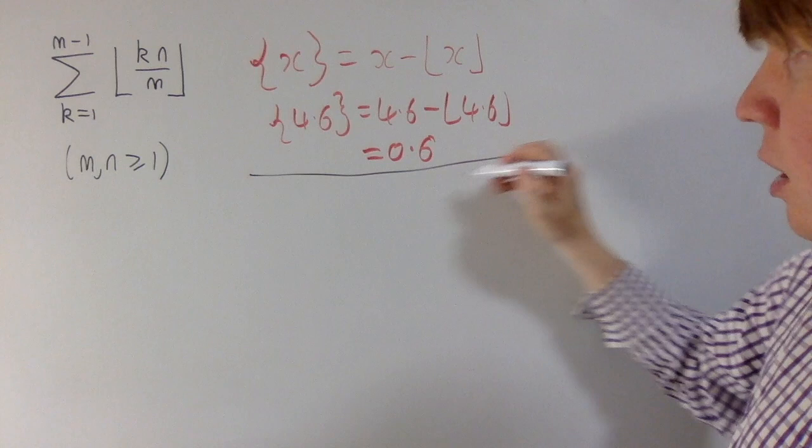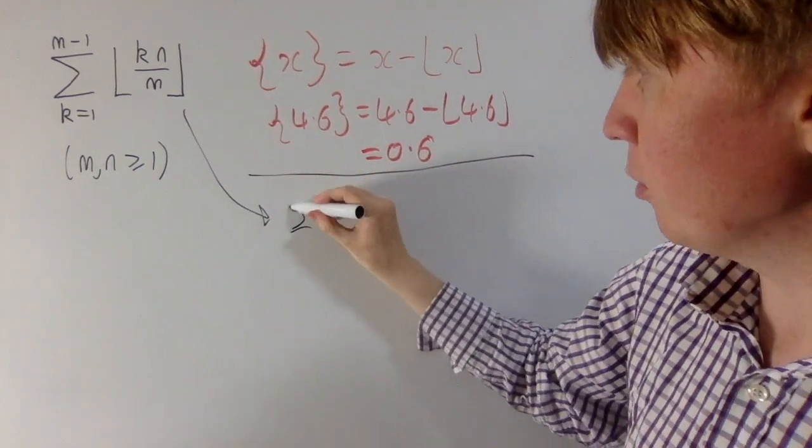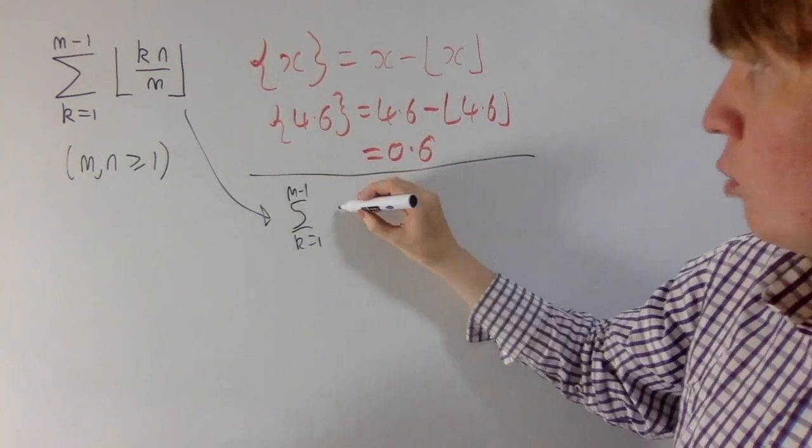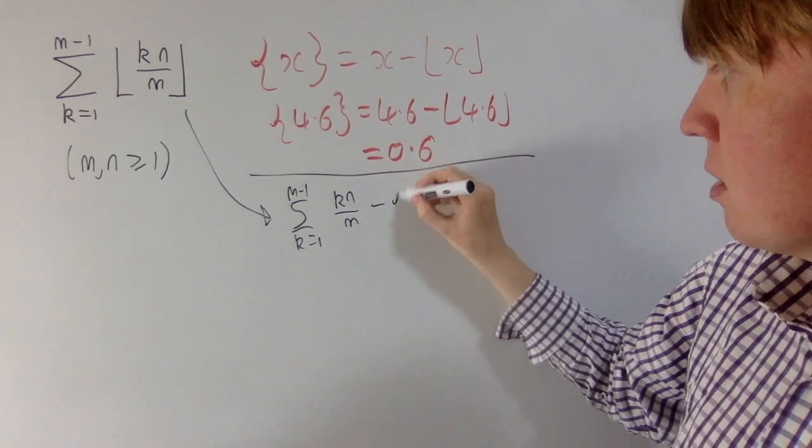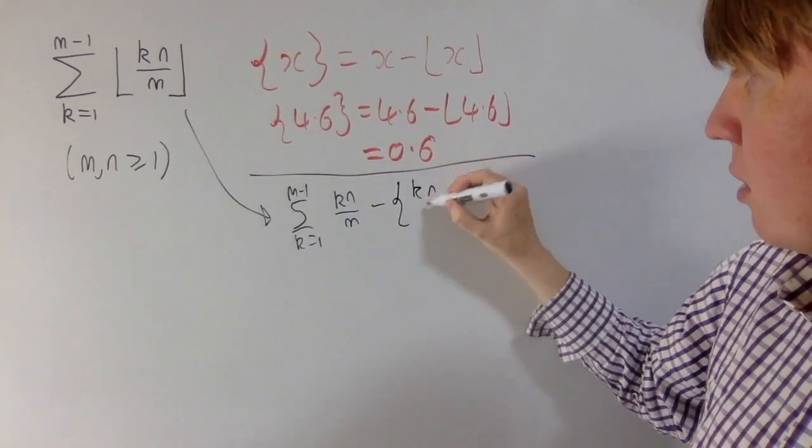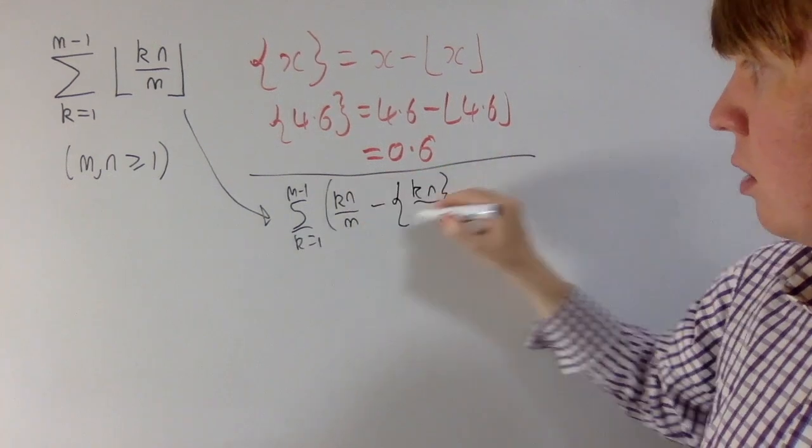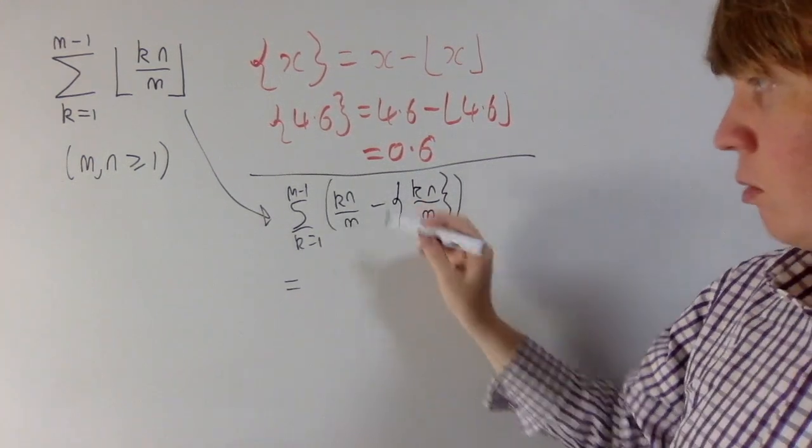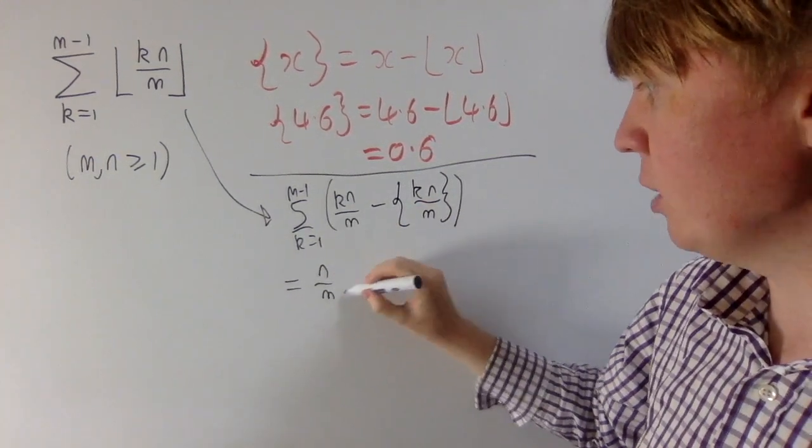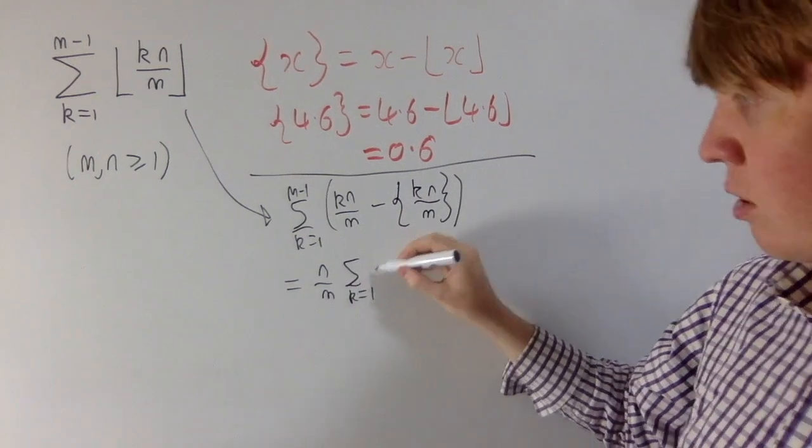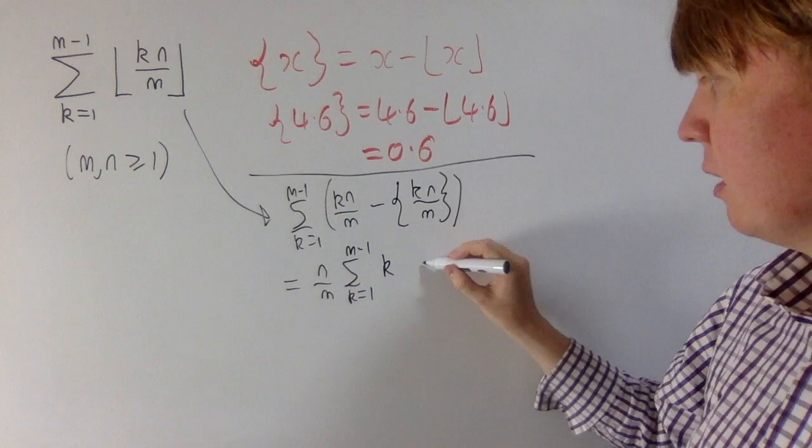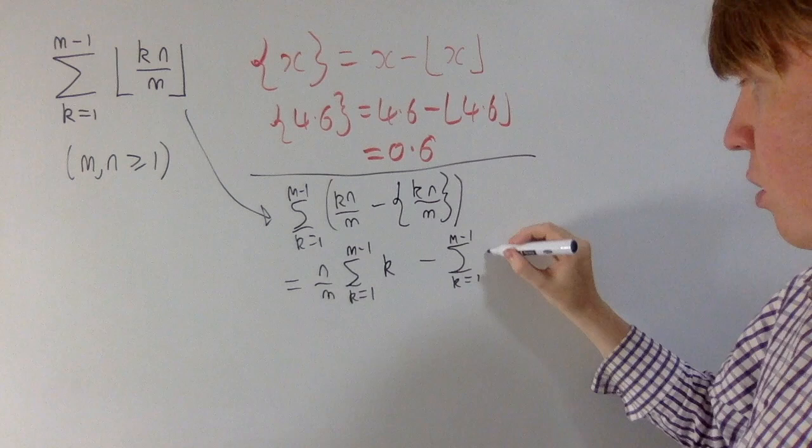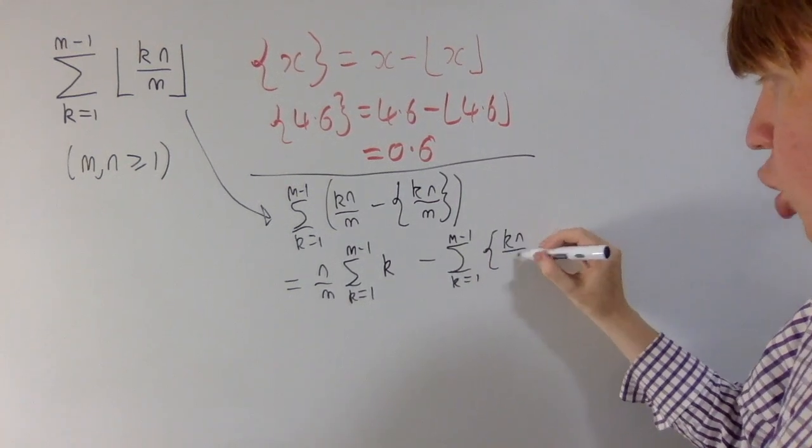So what we can do now is we can express this sum as the sum from k equals 1 up to m minus 1. Instead of writing this using the floor function, we'll write it as k n over m minus the decimal part of k n over m, the fractional part. And this is nice because now we can work with this k n over m term.